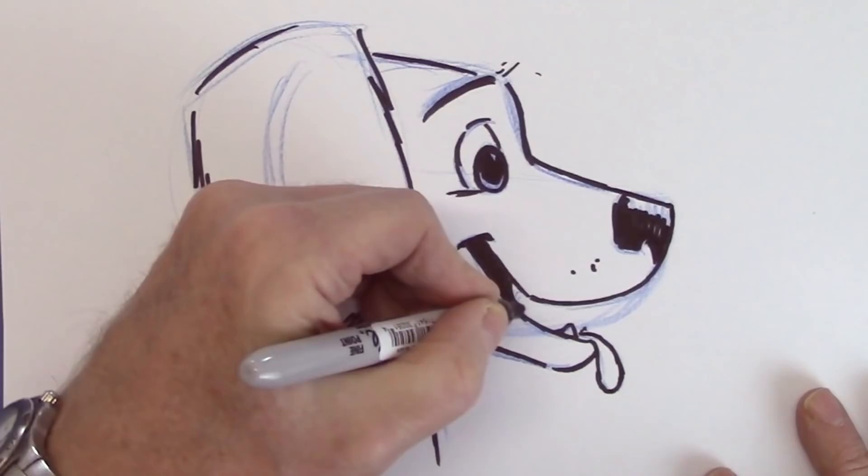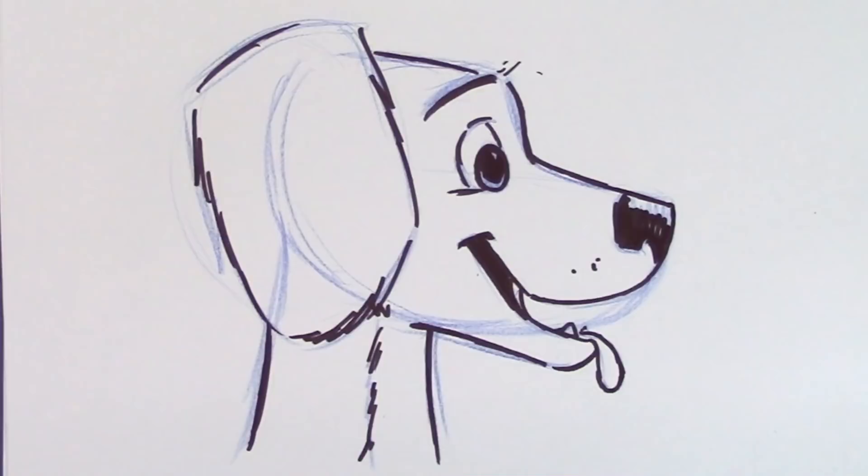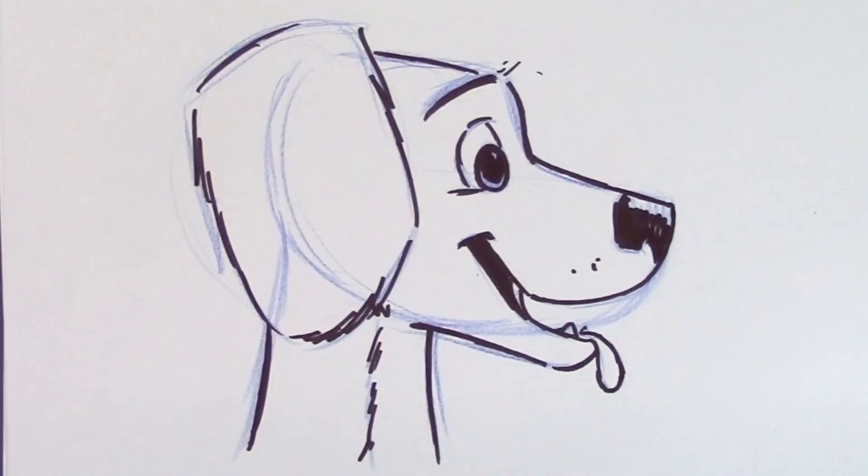All right. So, there is that little guy. My little guy. So, that is Spencer Dog. I know you want to draw your own dog, too. I hope this gives you some ideas. Please subscribe. New videos every week. Thanks for watching. Bye-bye.